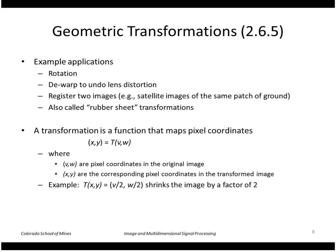We're going to think of a transformation as a function that maps pixel coordinates. Let's say v and w are the coordinates in the original image and x and y in the transformed image. For example, if we were just scaling by a factor of 2, then t is the function v over 2 and w over 2. But we actually need the inverse function, because what we really want to do is go through the output image and figure out at each x, y where that point came from — v, w — in the input image.